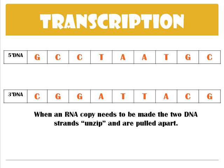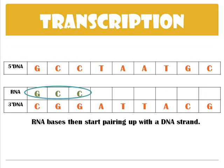When DNA unzips, RNA can come in and make a copy of the DNA. RNA does this the same way that DNA base pairs. RNA has guanine, cytosine, and adenine — and then instead of thymine, it uses uracil. You can see RNA bases starting to pair up with the DNA strand.